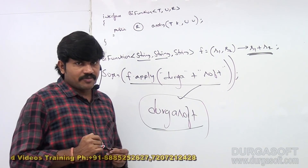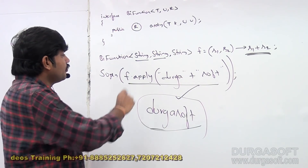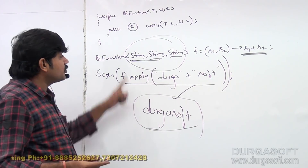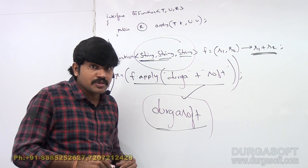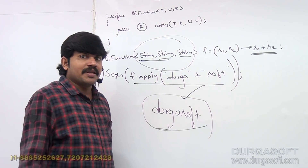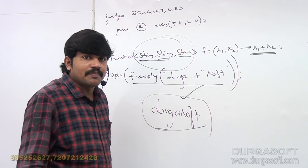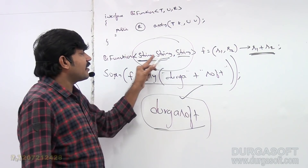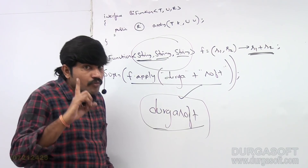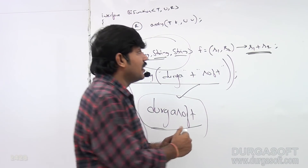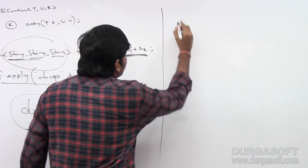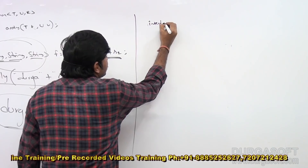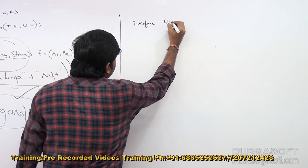Now my requirement is that all input types and the return type are the same. Why do we have to specify type three times? It is better to go for binary operator. If we go for binary operator, the input and output are the same type — we are not required to specify it three times, only once.